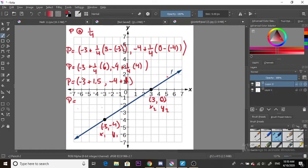So -3 plus 1.5 is gonna give us -1.5, and -4 plus 1 is gonna give us -3. And this is our answer. So this is how you would use the point of division formula to find any point located between our point A and B.